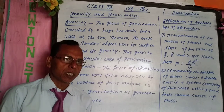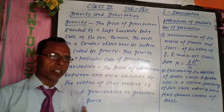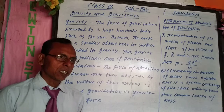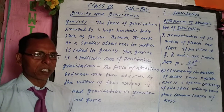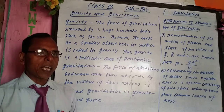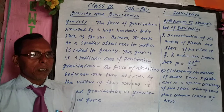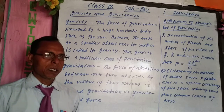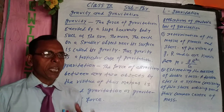Fixed stars are those stars that do not move — they have no movement. Variable stars are those stars that move in any direction; they have no fixed direction and no fixed orbit. They move here and there, and the path of these stars may be straight, curved, or zigzag — they have no fixed path and no fixed orbit.